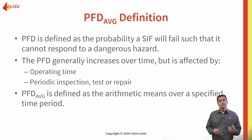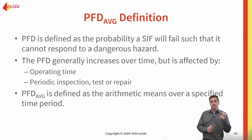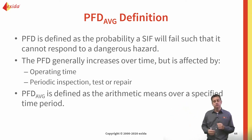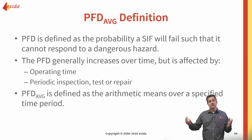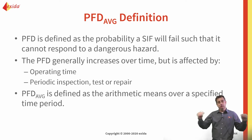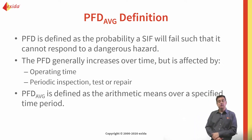The probability of failing dangerous increases as a function of time. When everything is brand new, the probability of failure may be zero or close to zero, but after a year it may be a lot higher. So which probability should we look at when determining what SIL level we meet — the lowest or the highest? In reality, what we're doing is looking at the average over the lifetime of a particular function.